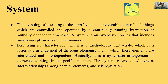First of all, system. System ko hum Hindi mein jaante hain 'tantra' ya 'nikai' ke naam se, aur hum isko kai vishayou mein padhte hain. Generally biology mein — digestive system, reproductive system, circulatory system, respiratory system. Urdhu mein: roodhi tantra, parisancha tantra, shwas tantra, pachan tantra.